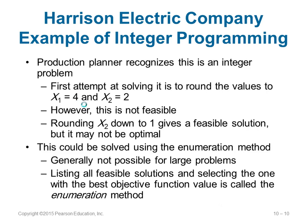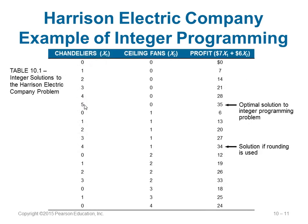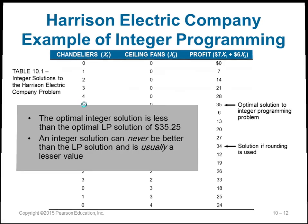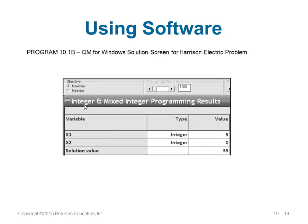Using the enumeration method, they try different combinations of chandeliers and fans, checking constraints and profit for each. The optimal integer solution found is $35. An important observation: the optimal integer solution is less than the LP solution — LP gave $35.25, integer programming gives only $35. In summary, an integer solution can never be better than the LP solution and is usually a lesser value. These problems can be solved using software.